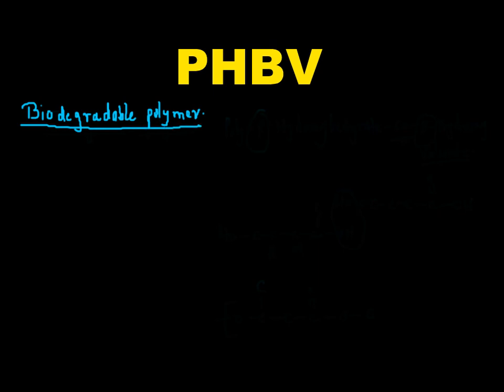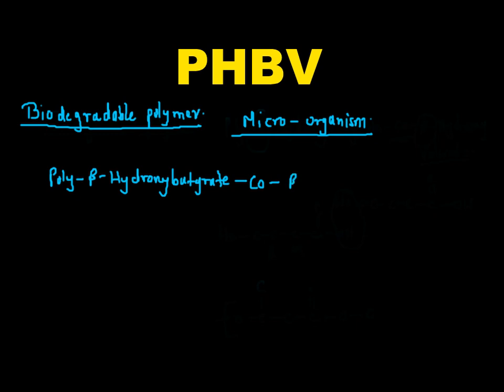Biodegradable polymer is a polymer which is being degraded by microorganisms. The PHBV stands for poly-beta-hydroxyl-butyrate-co-beta-hydroxyl-valerate. PHBV is an example of co-polymer, that is a polymer made up of two different monomers.